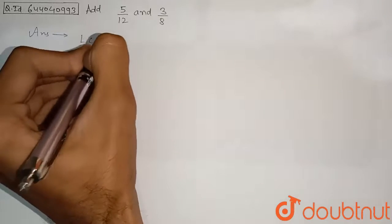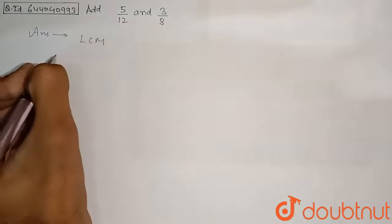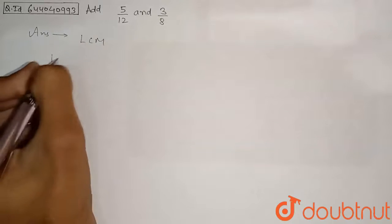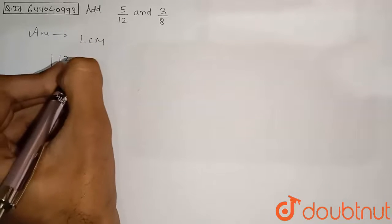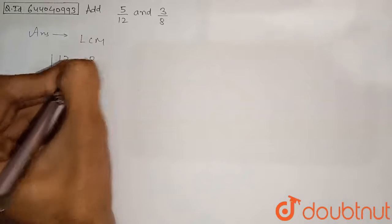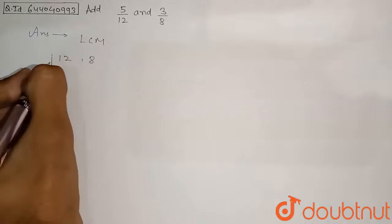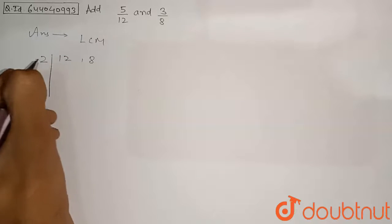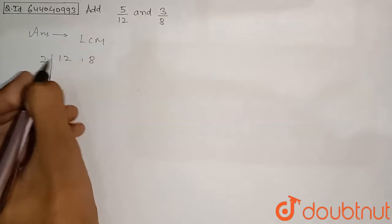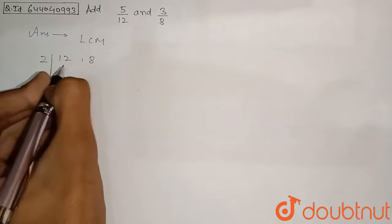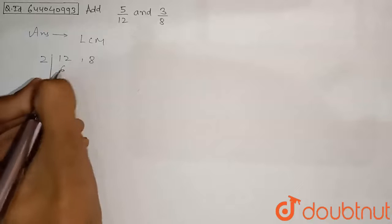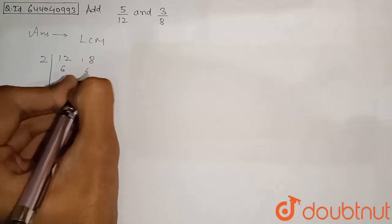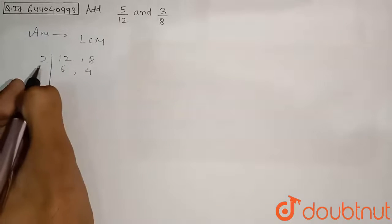We will use the prime factorization method to find the LCM of 12 and 8. We divide both numbers by 2. 12 divided by 2 gives 6, and 8 divided by 2 gives 4. So we have 6 and 4.